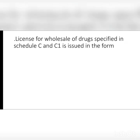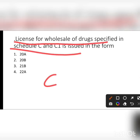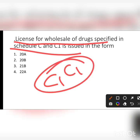Next question: the license for wholesale of drugs specified in Schedule C and C1 is issued in form number 21B. The right answer is option 3.